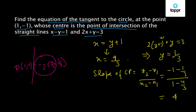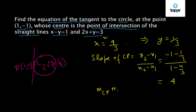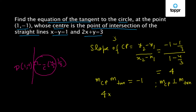The slope of CP is 4. Now we know that CP is perpendicular to the tangent. So the slope of the tangent and the slope of CP are related by: M_CP times M_tangent equals minus 1, because CP is perpendicular to the tangent. Since the slope of CP is 4, we get 4 times M_tangent equal to minus 1, so the slope of the tangent is minus 1/4.